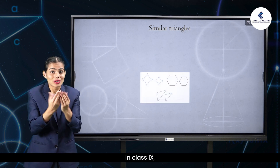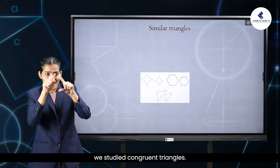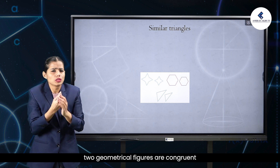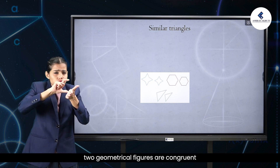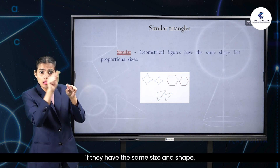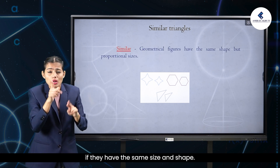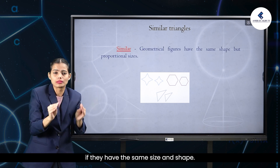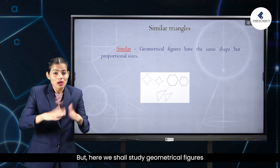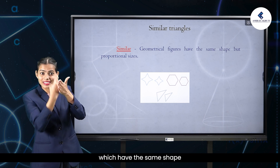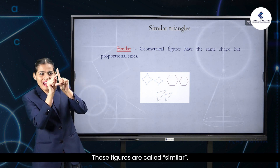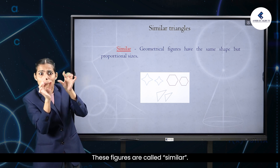In class 9th, we studied congruent triangles. We can say that two geometrical figures are congruent if they have the same size and shape. But here, we shall study geometrical figures which have the same shape but proportional sizes. These figures are called similar.